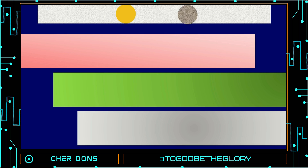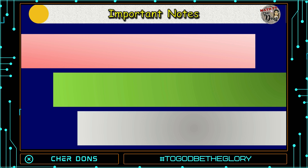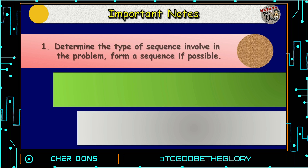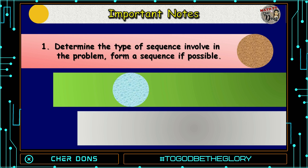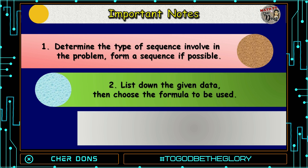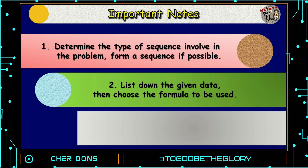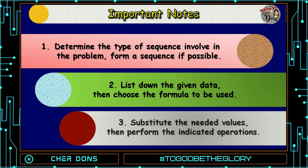There are three things we must consider in solving word problems involving sequences. Number one, determine the type of sequence involving the problem, and form a sequence if possible. Number two, list down the given data, then choose the formula to be used. The last one, substitute the needed values, then perform the indicated operations.